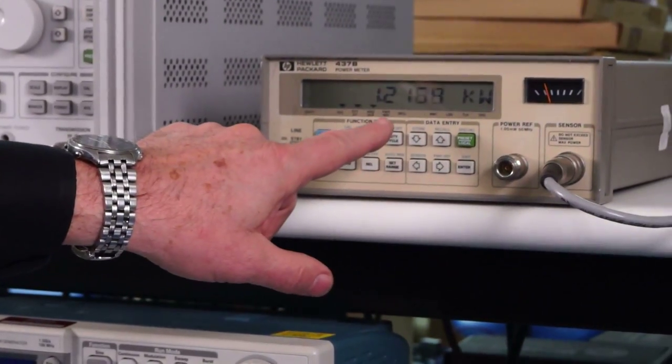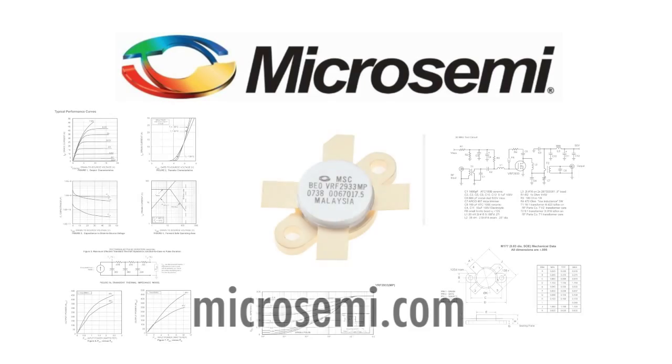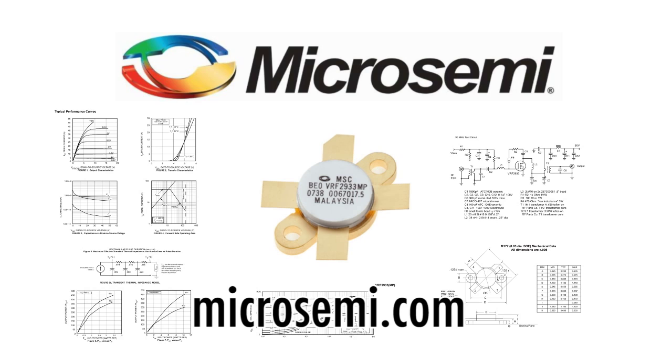Well, perhaps it's a little bit higher now that it's warmed up. We hope you have enjoyed this demonstration of the VSWR ruggedness of MicroSemi's VRF 2933, a most capable VDMOS part that was first introduced in 2008. While other competitors work to match this level of performance, MicroSemi has been doing it for years.